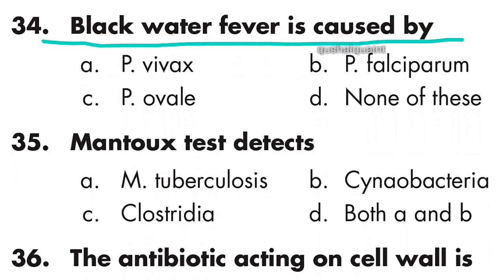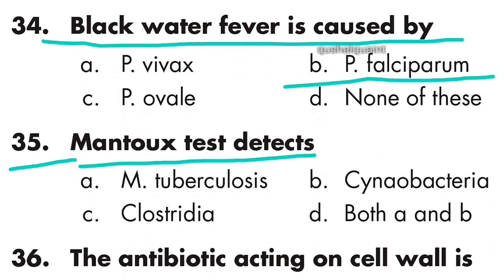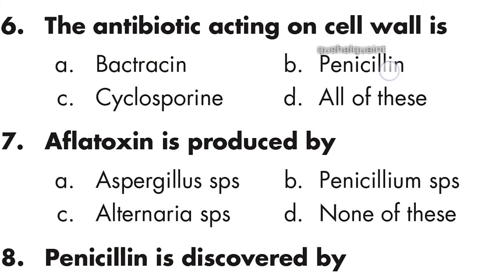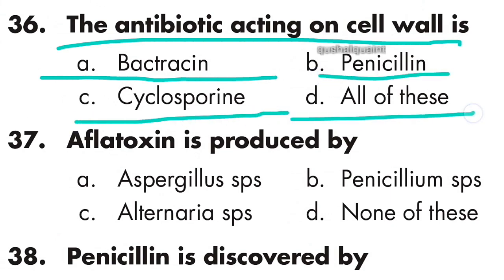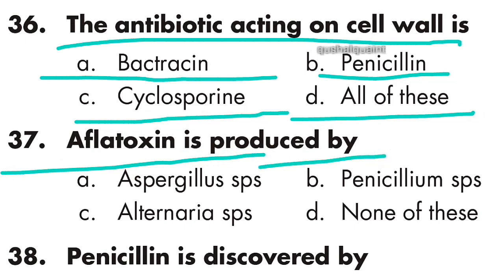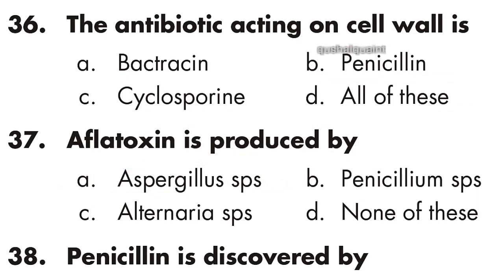Question 34: Black water fever is caused by Plasmodium falciparum. Option B is right. Question 35: Mantoux test detects Mycobacterium tuberculosis. Option A is right. Question 36: Antibiotics acting on the cell wall are bacitracin, penicillin, and cyclosporine — all of these. Option D is right. Question 37: Aflatoxin is produced by Aspergillus species. Option A is right.